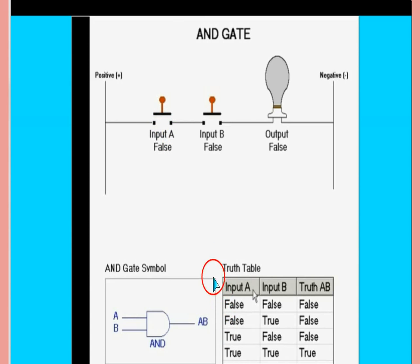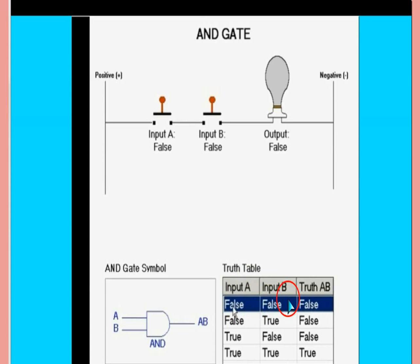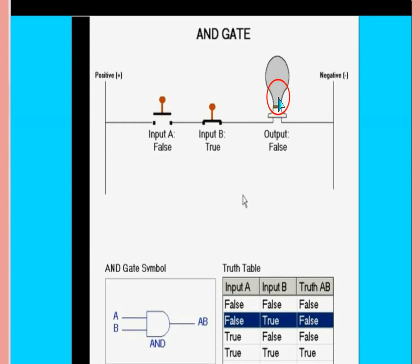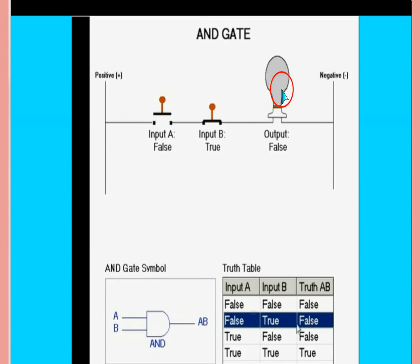Now, input A is false, meaning zero; B is false, meaning zero, and the output is again zero. Here you can see both switches are open — zero, zero — not working, the light is off. Zero and one, again off, meaning false. Zero, one, again off because current cannot flow as the line is broken here.